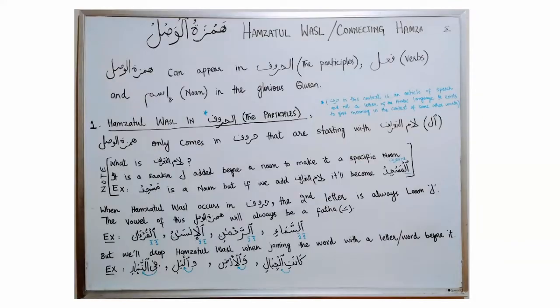Hamzat al-Wassl can appear in khuroof (the participles), fi'il (verbs), and ism (nouns) in the glorious Qur'an. Before we jump into the details of Hamzat al-Wassl in khuroof, note that harf in this context is an article of speech and not a letter of the Arabic language. Harf exists to give meaning in the context of some other word — we are not talking about letters of Arabic language but an article of speech.